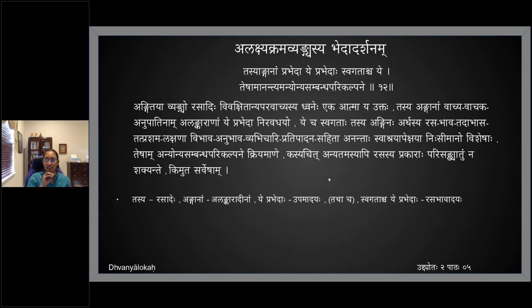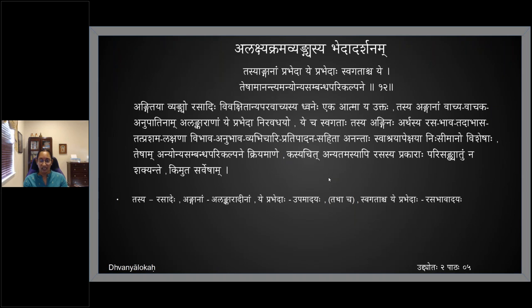Vivakshita anyaparavachyatvani can have two varieties: asamlakshikrama and samlakshikrama. Samlakshikrama — you go through a process and then you have rasapratiti, whereas asamlakshikrama is just immediate and quick; there is no interval between understanding the vachyartha and getting the rasapratiti. Vivakshita anyaparavachya dhanehe ekaha atma yaha uktaha — tadrishaha rasadehe.